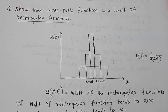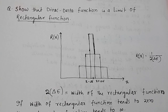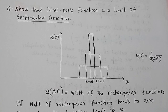The Dirac delta function is a limit of a rectangular function. From the Dirac delta function, we know delta(x) equals 0 if x is not equal to 0, and delta(x) equals infinity if x equals 0. This behavior is also possible in the case of a rectangular function.